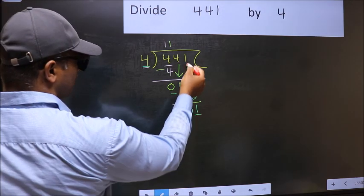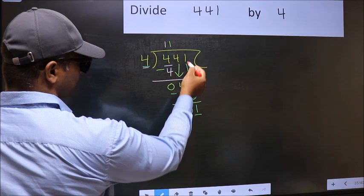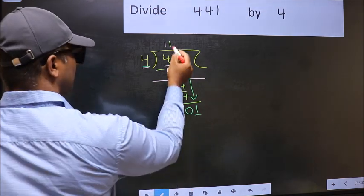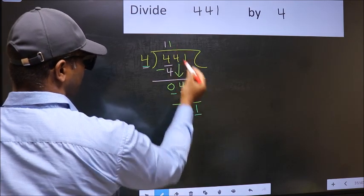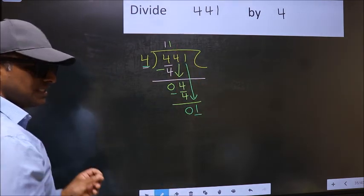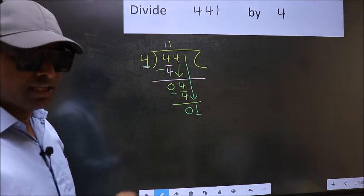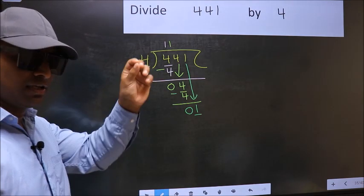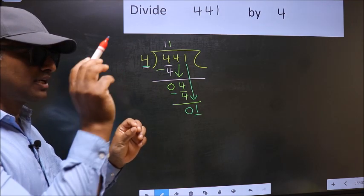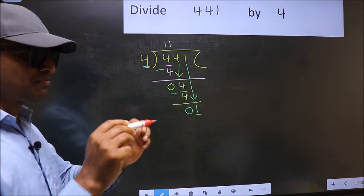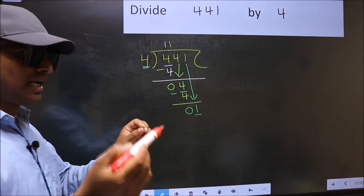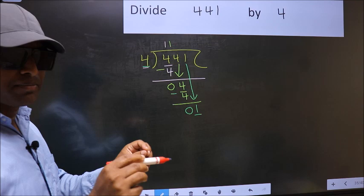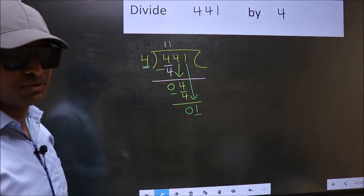Because, just now you brought this number down. And in the same step, you want to put a dot and take 0. Which is wrong. I repeat. Bringing the number down and also put a dot and take 0, both at the same step. You are not supposed to do.